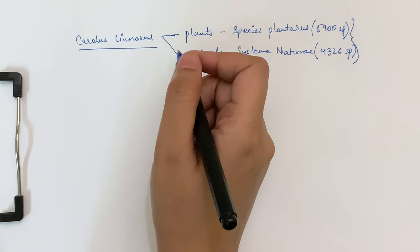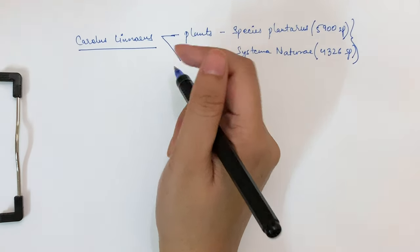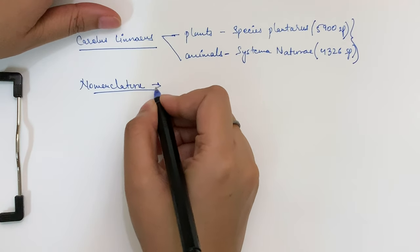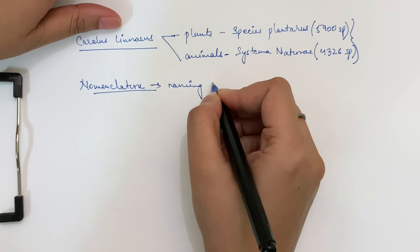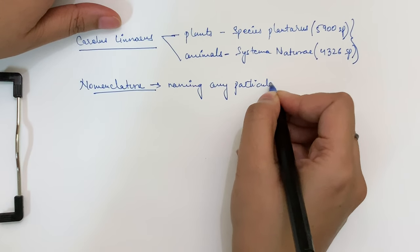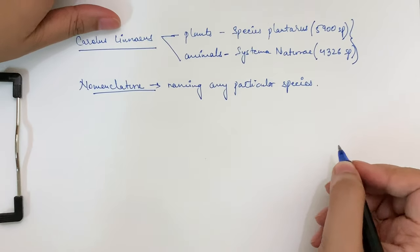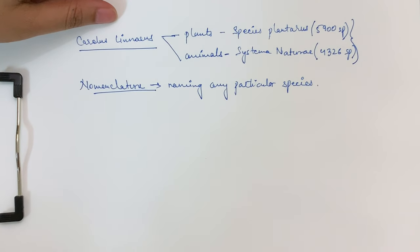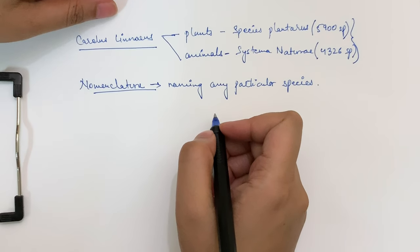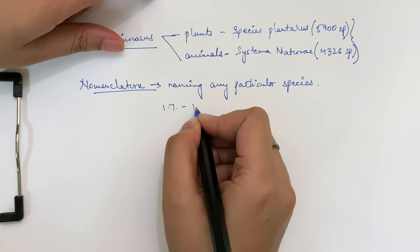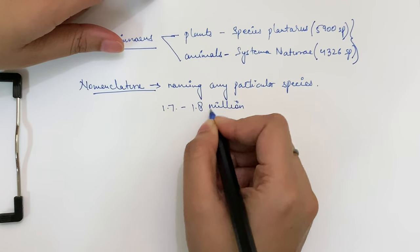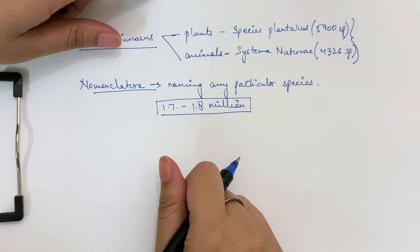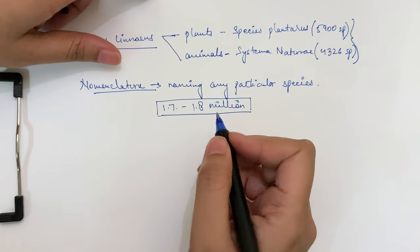Now let's start with nomenclature and why it is so important. Nomenclature is basically the naming of any particular species. The number of species that are known and described on earth ranges between 1.7 to 1.8 million. These can be plants, animals, or any other organisms.